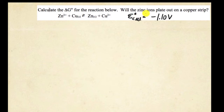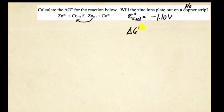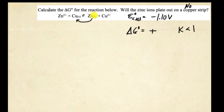The question is: will the zinc ions plate out of the copper strip? Well, if the cell potential is negative, then you should know that the reaction is going in this direction and not producing the product. So the answer is quickly no. If you know that the cell potential is negative, then you know that your free energy is positive — not thermodynamically favorable. The reaction will not shift to the right; it will stay on the left side. Therefore, K has to be less than 1 because the reaction is favoring the reactants, not the products.